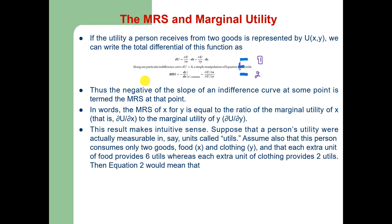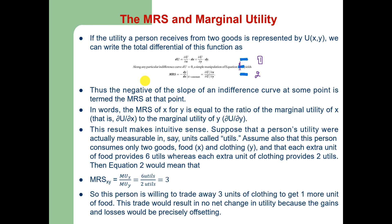This result makes sense because if a person's utility were actually measurable in units called utils, and this person consumes only two goods — food (x) and clothing (y) — where each extra unit of food provides 6 utils and each extra unit of clothing provides 2 utils, then the marginal rate of substitution of x for y would equal 6/2 = 3.